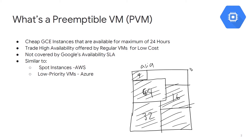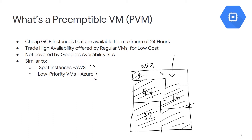Google has all these data centers across the world that are being utilized to varying degrees, and what happens is they're left with this excess capacity that is not being utilized. From a cloud provider's point of view, you have all these resources laying around — in our case it's compute — that is not being utilized, so you're not earning any money from it. You have to pay for the CPUs, pay for the RAM, maintain it — so at least let's find a way to make some money off it.